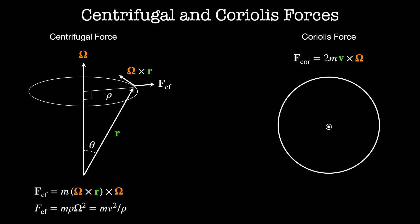Now let's look at the motion of a particle under the Coriolis force. Imagine a player at the origin aims a tennis ball towards a tennis racket in the rotating frame — the ball's velocity is oriented radially outwards. In the lab frame, the ball moves radially outwards while the racket rotates at constant angular velocity omega. But in the rotating frame, the racket remains fixed while the Coriolis force acts on the ball, pushing it away from the racket in the opposite direction of motion.